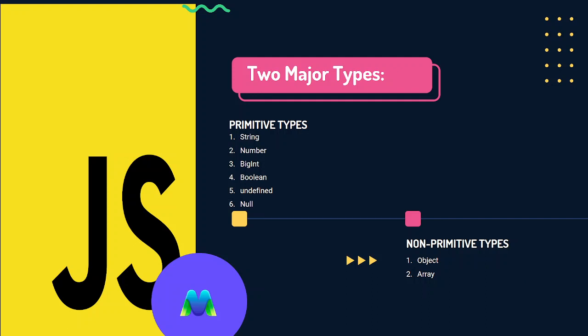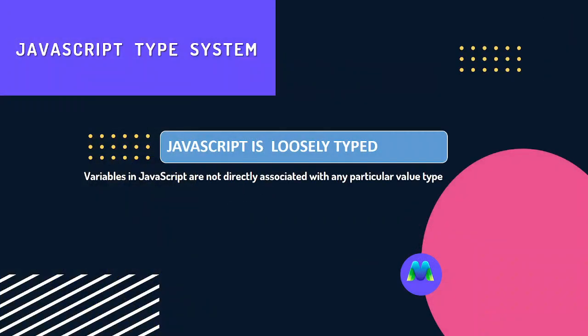As we can see, in the JavaScript type system, JavaScript is loosely typed. Variables in JavaScript are not directly associated with any particular value type, which means you can specifically say the type of value.